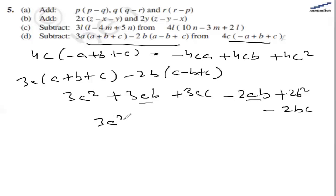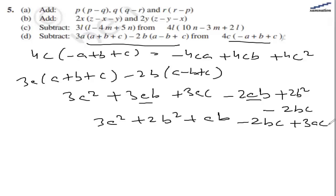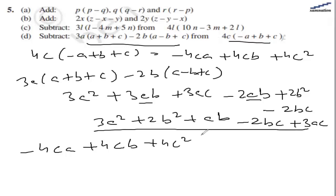Simplifying the second expression: we get 3a² plus 2b² plus ab and the remaining terms. Now subtracting this from the first expression, all signs become negative: minus 3a² minus 2b² minus ab plus 2bc minus 3ac.